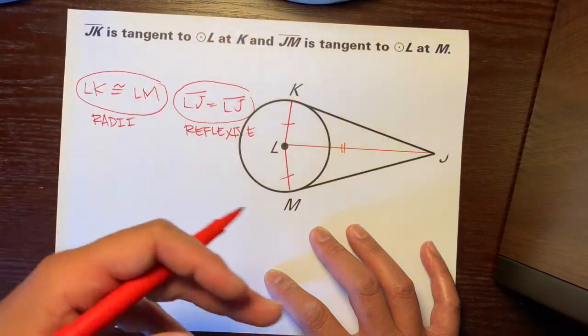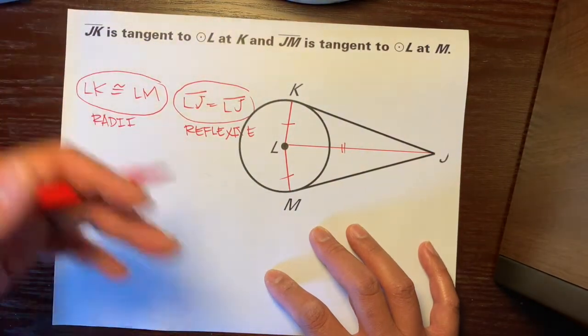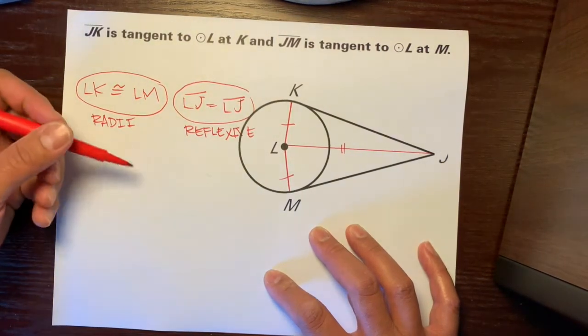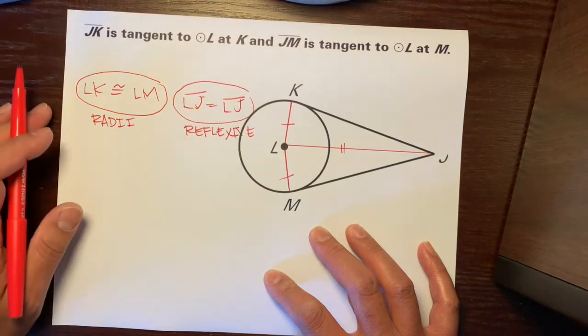So, Mr. Q is congruent to Mr. Q, reflexive. Your name is congruent to your name, that's because you're reflexive. So, you're congruent to yourself.